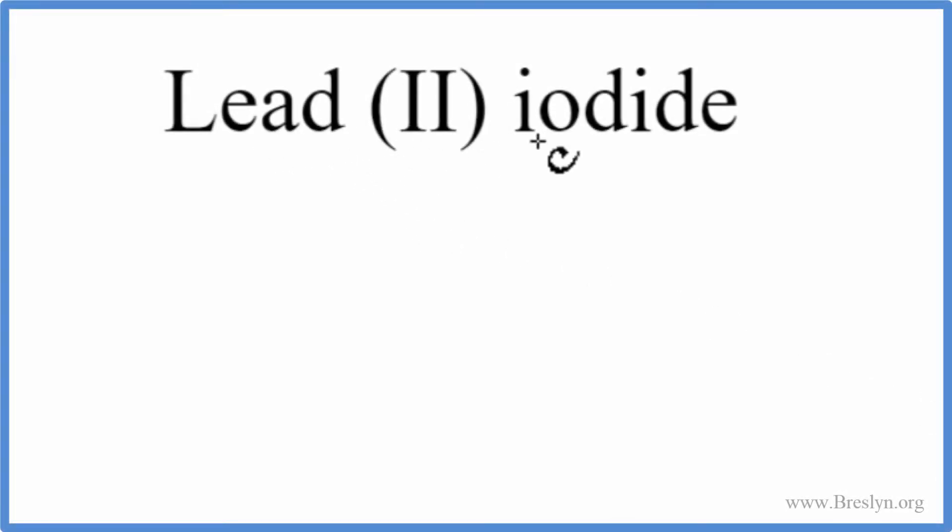To write the formula for lead (II) iodide, we go to the periodic table and look lead up, and the element symbol for lead is Pb.